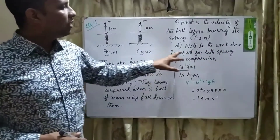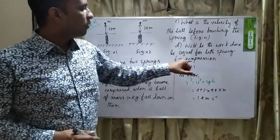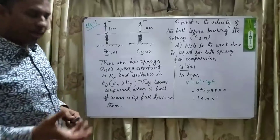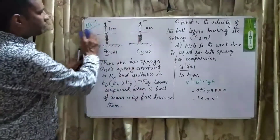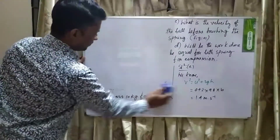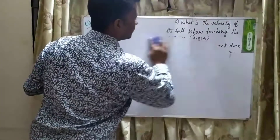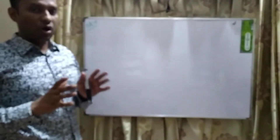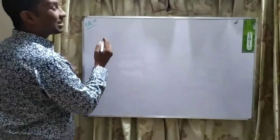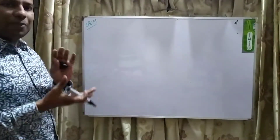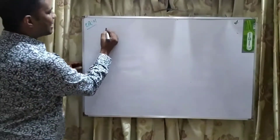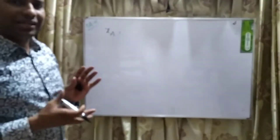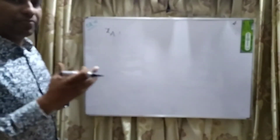Now we go to question D: will the work done be equal for both springs during compression? Let's do the math. We know the work done equation for a spring. Let the compression for the first spring be XA, and the compression for the second spring be XB.